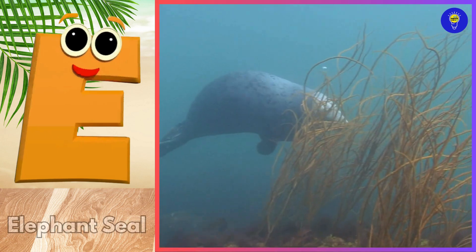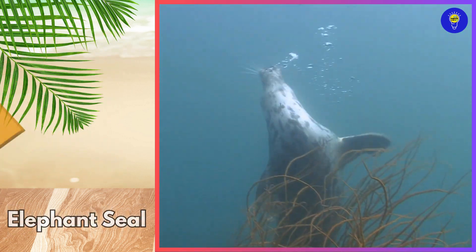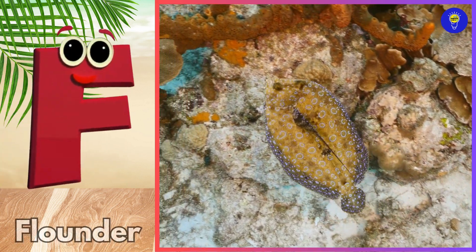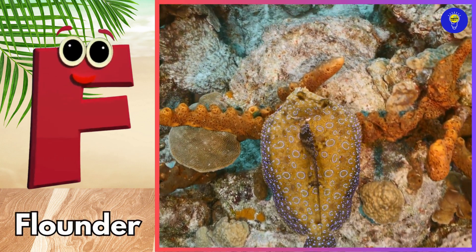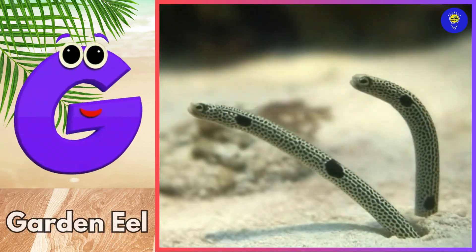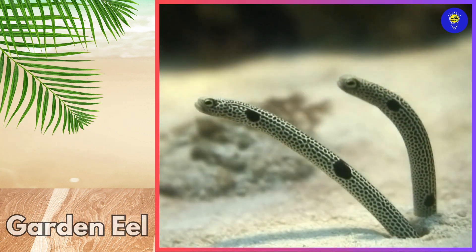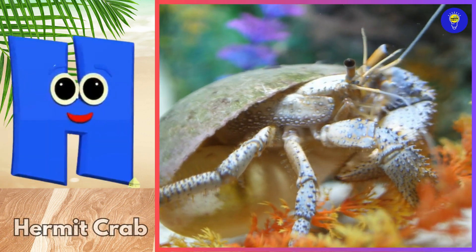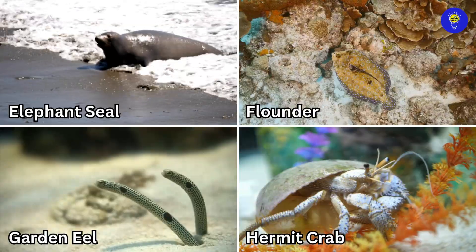E is for elephant seal, eh, elephant seal. F is for flounder, fuh, flounder. G is for garden eel, guh, garden eel. H is for hermit crab, ha, hermit crab.